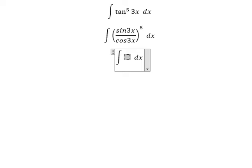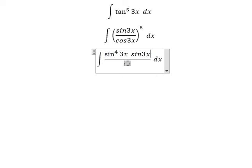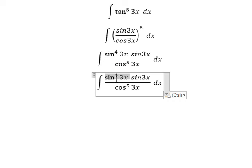For this one we can write it like this: we have sin^4(3x) multiplied by sin(3x), over cos^5(3x). Now sin^4(3x), that's sin^2(3x) to the power of 2.